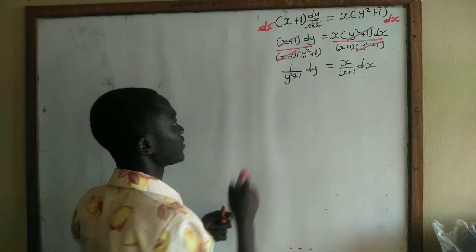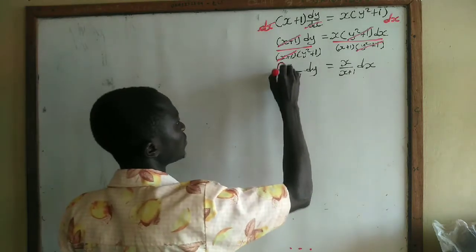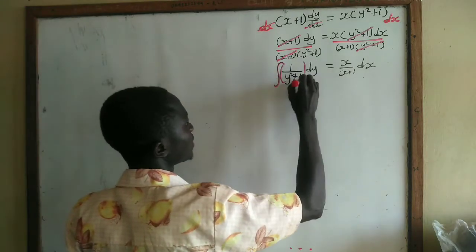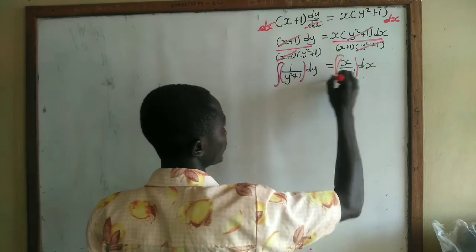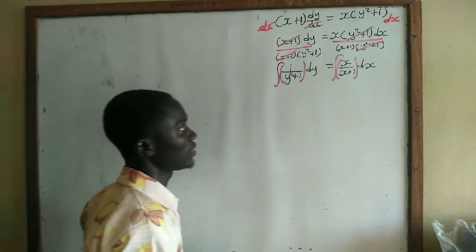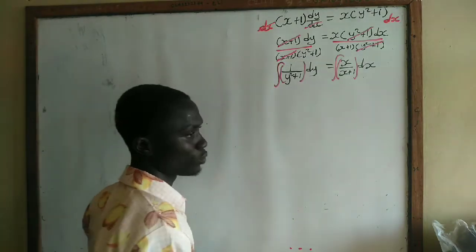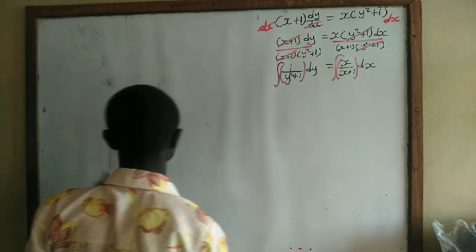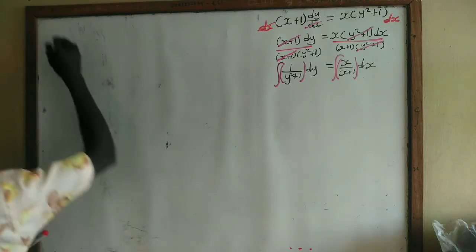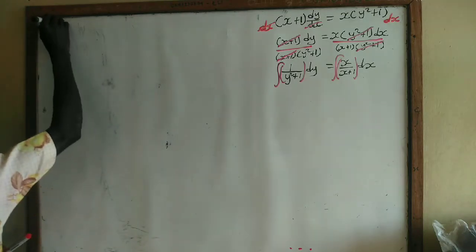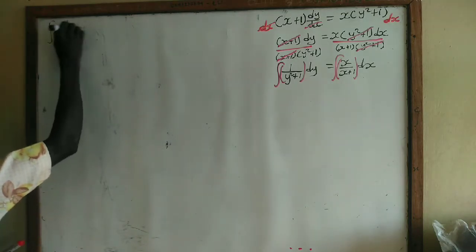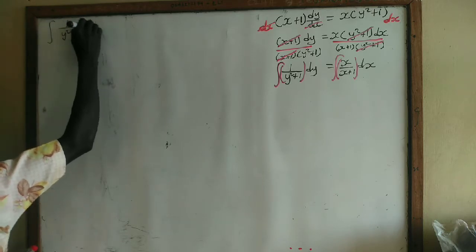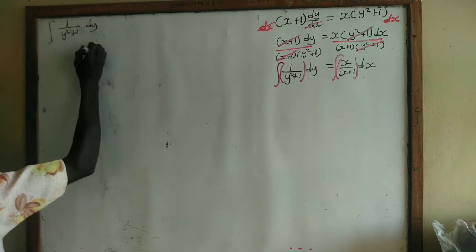Let us do the integration — we take the integral of the left side and the integral of the right side. Now, how do we do the integration for this one? We have the integral of 1/(y² + 1) dy.